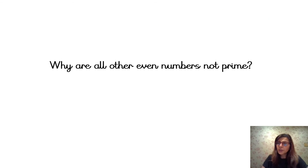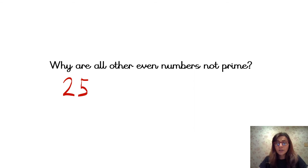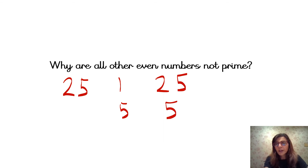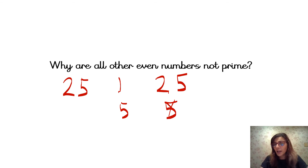Let's have a look at the number 25. The first thing I'm going to ask myself is: is it an odd number or an even number? Well, it's an odd number, so it could be a prime number. Now I'm going to list all the factors of 25. I'll always start with 1 times 25. But I also know I can have 5 times 5. So 5 is a factor of 25. This cannot be a prime number because I've got 1, itself (25), and another number — it's got actually 3 factors. So 25 cannot be a prime number.